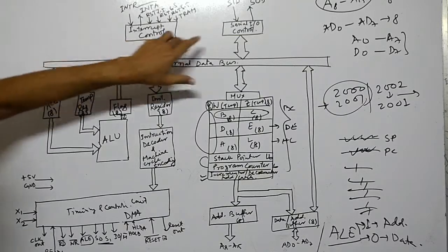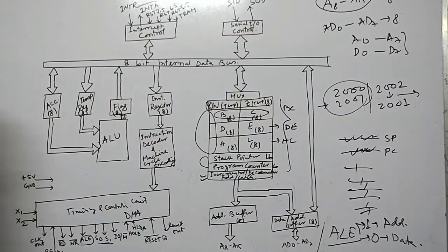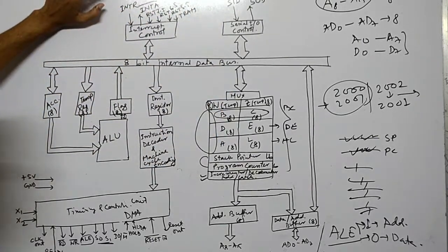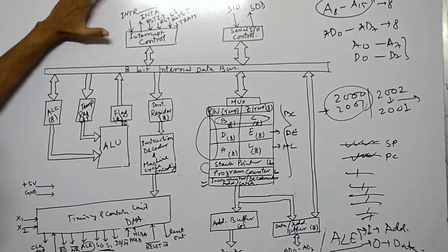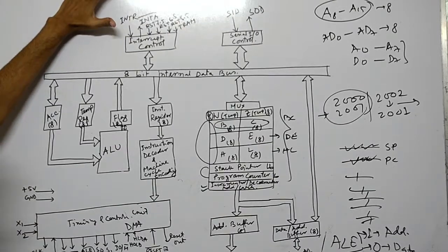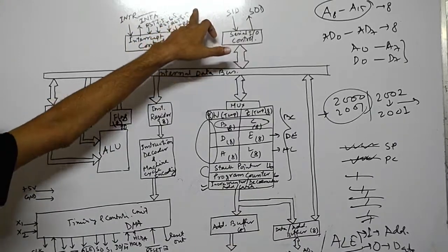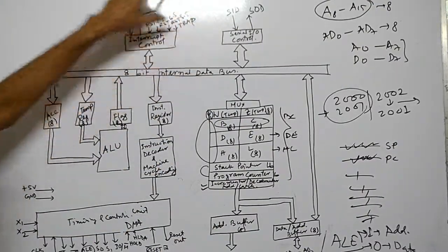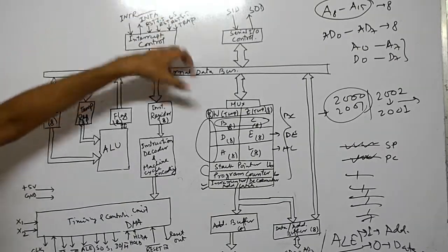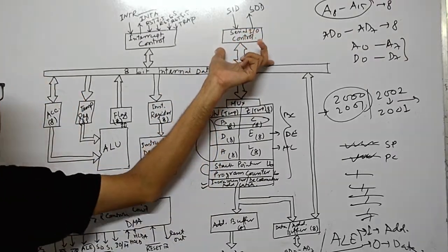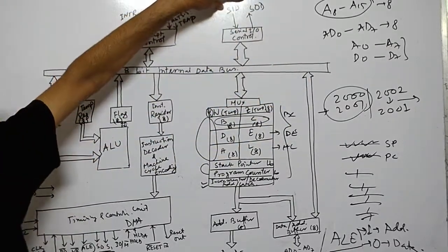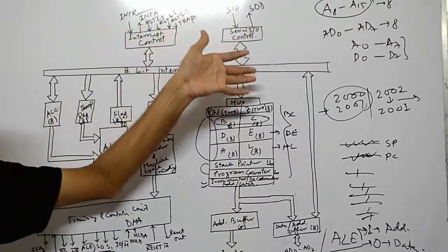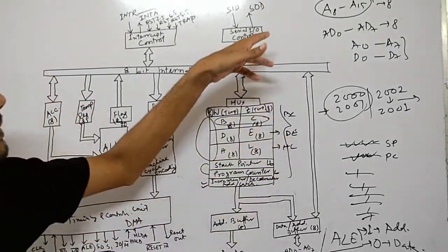There are two more units: the interrupt control unit and the serial I/O control unit. The interrupt control unit handles interrupts, where the processor stops normal operation to execute other instructions. The 8085 has five interrupts: RST 7.5, RST 6.5, RST 5.5, INTR (software interrupts), and TRAP (hardware interrupt). The serial I/O control unit has two operations: SID (serial input data) for incoming serial data and SOD (serial output data) for outgoing serial data.